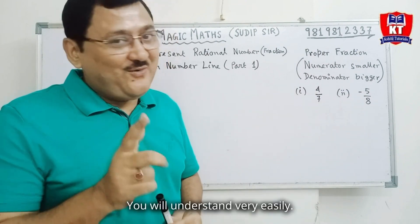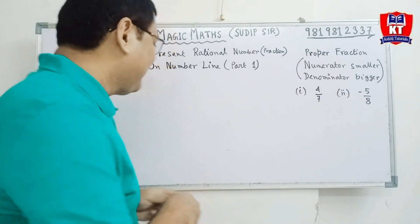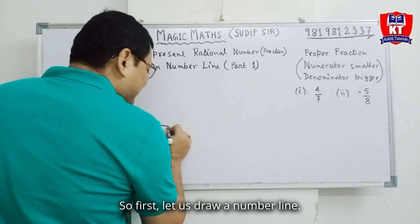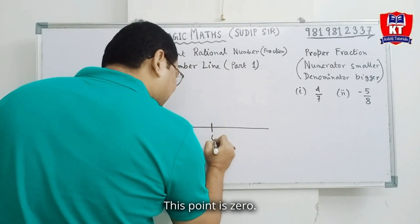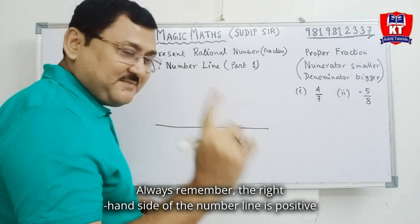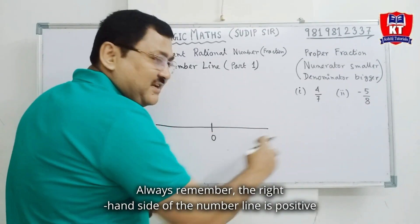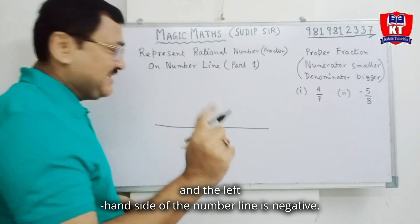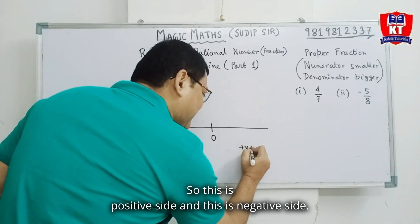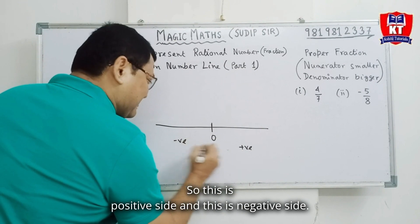So, let us start. You will understand very easily. So, first let us draw a number line. This point is 0. Always remember, the right hand side of the number line is positive and the left hand side of the number line is negative. So, this is positive side and this is negative side.